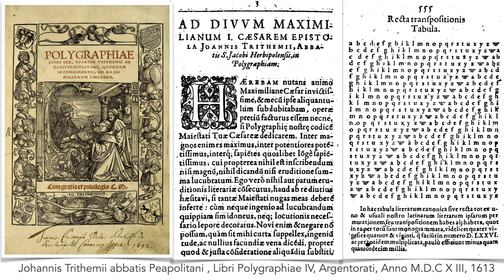This is the original text of the monk Johannes Trithemius, who lived from 1462 to 1516. We see the front page, the middle, the first page, and page 555 which contains this table.